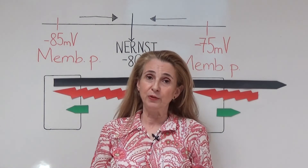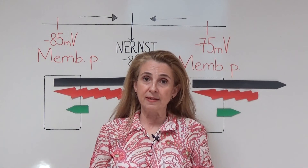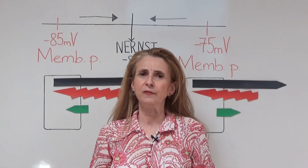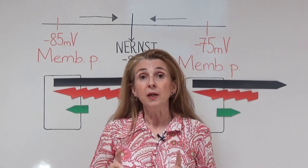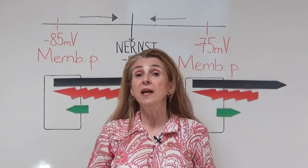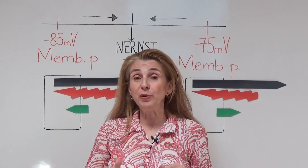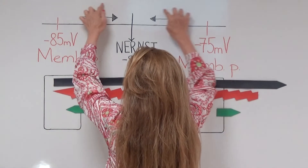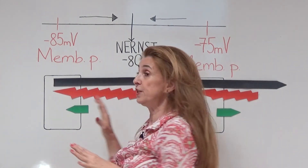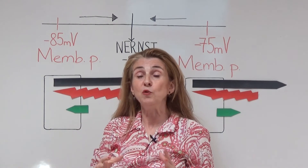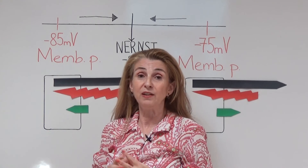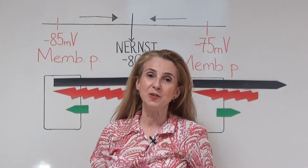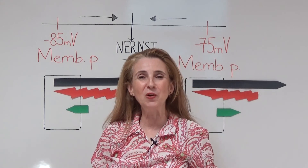In this video, I tried to explain two important sentences. One is that the Nernst potential is not a true electrical potential difference — it represents the chemical force. Two, the ions try to bring the membrane potential towards the Nernst potential. Under different conditions, the ions move in such a direction that they try to equalize these two potentials. I hope this information has been useful for you. Thank you for watching.